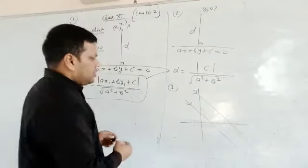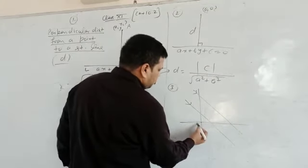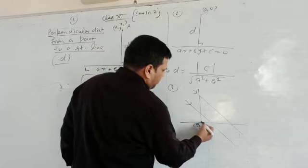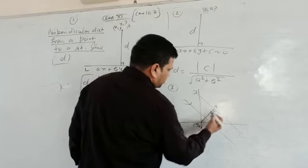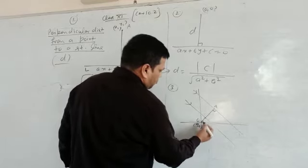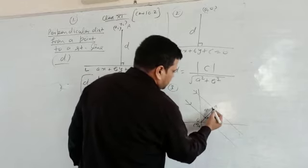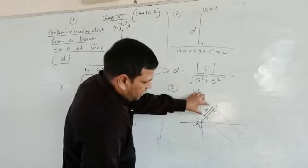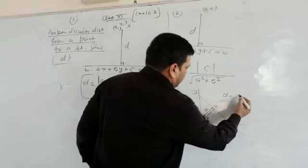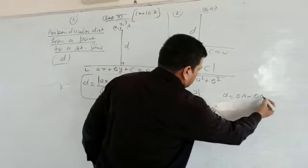For that, what should be done? From origin 0, 0, you can find out a perpendicular distance OA, and also from O to this line B, OB. And when you require the distance between two parallel lines, you should have OA minus OB.